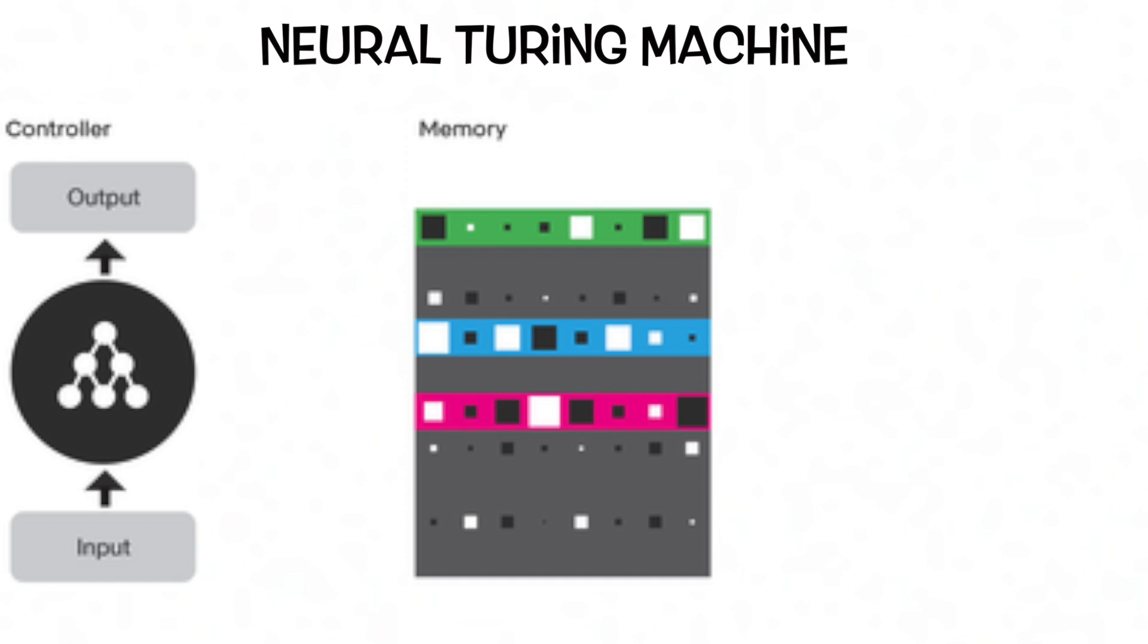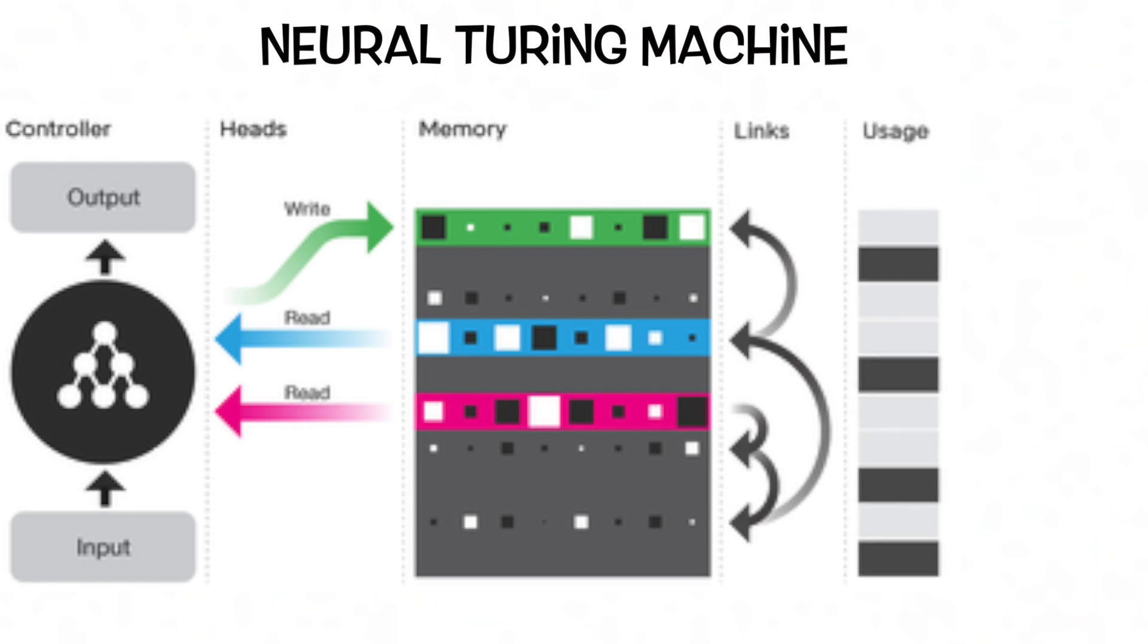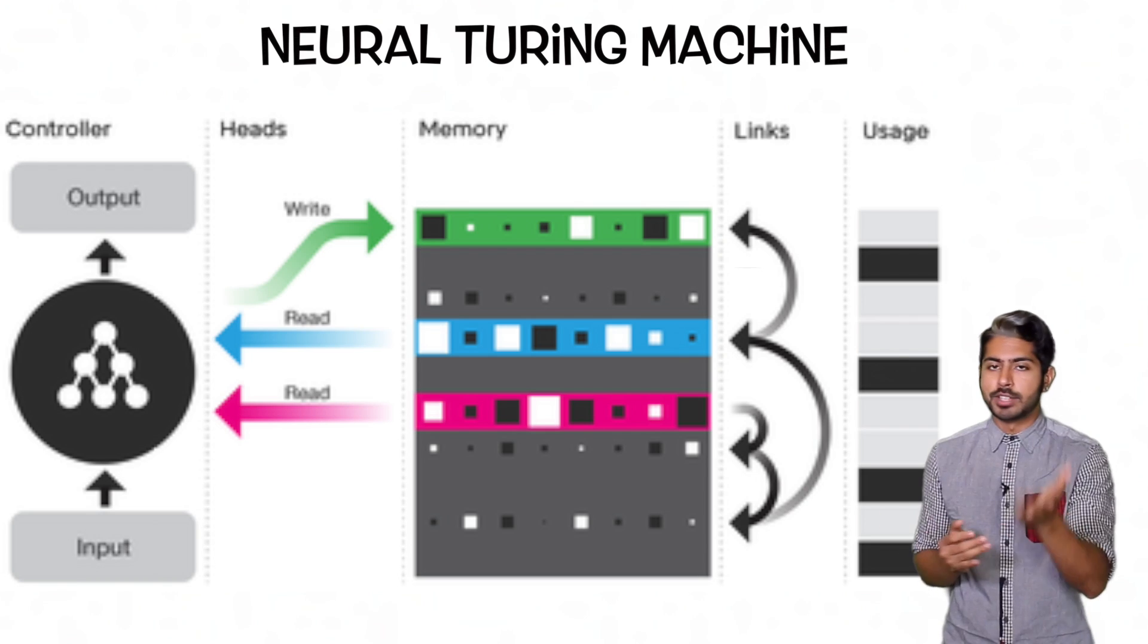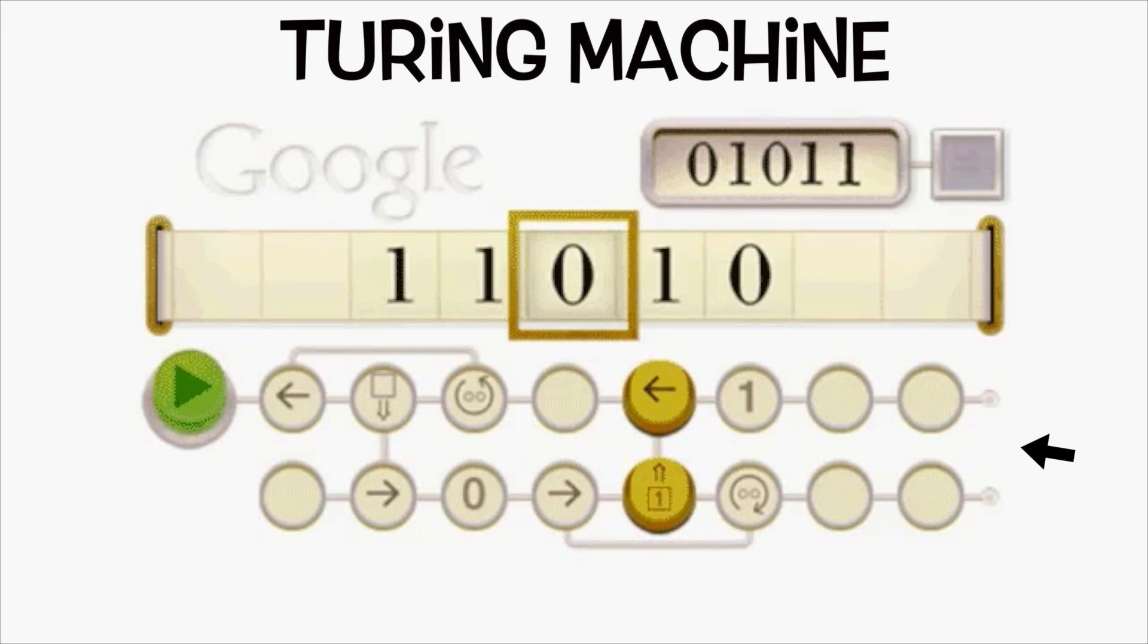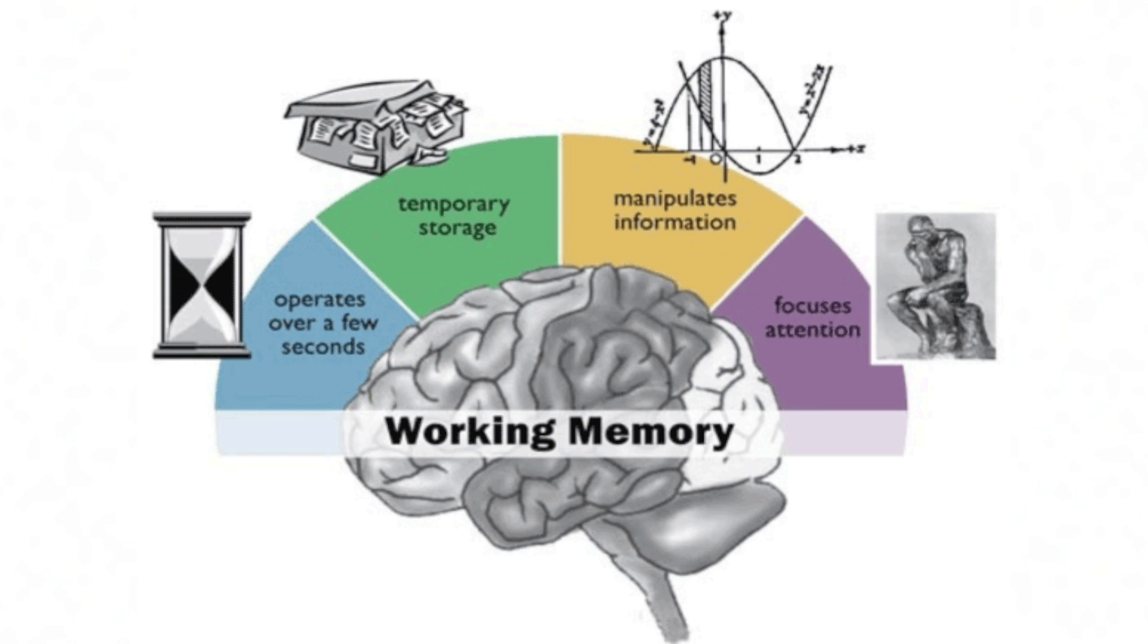But what makes it special is that it also interacts with a memory matrix using read and write operations. This is where the Turing machine analogy comes from, not just because it sounds dope, but because a Turing machine manipulates symbols on a strip of tape according to a table of rules. It's like having a working memory for a brain. The network learns how best to use its memory when learning a solution to a given problem.